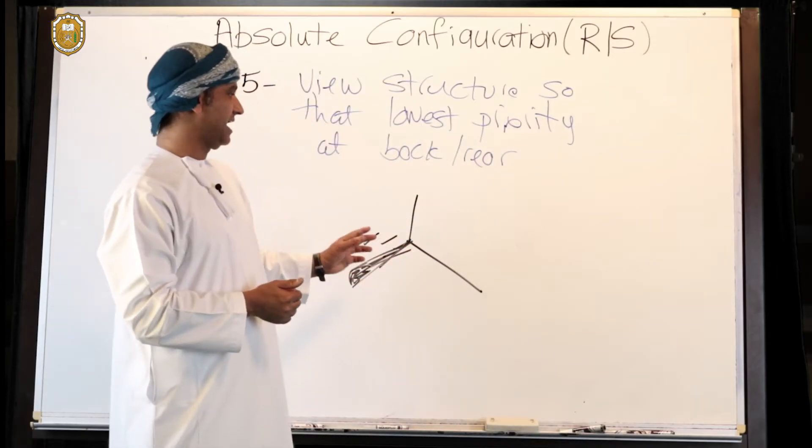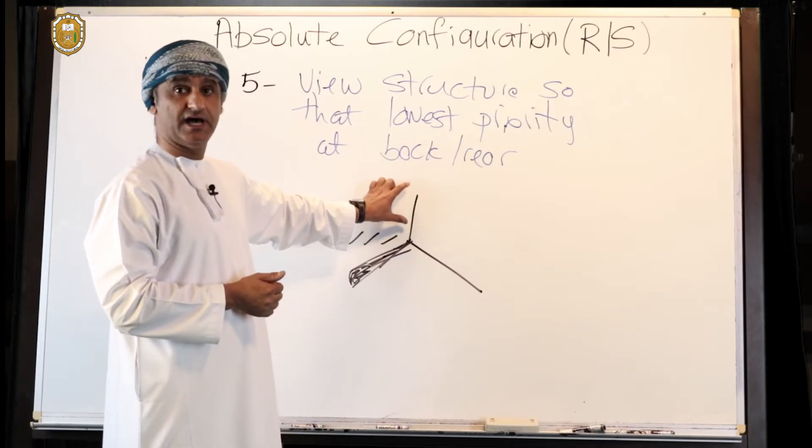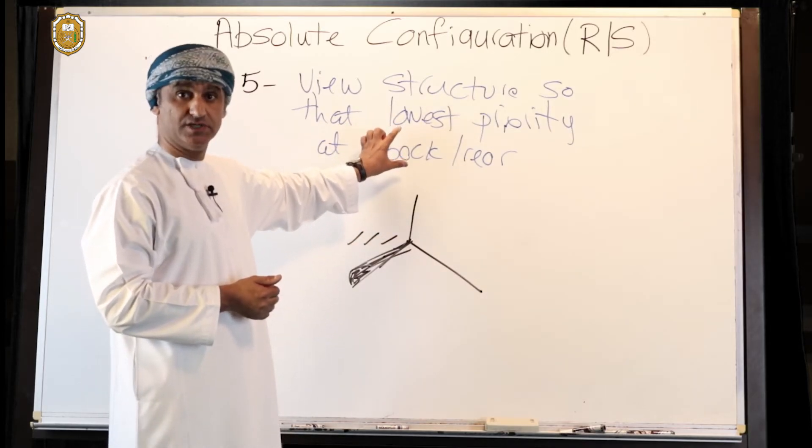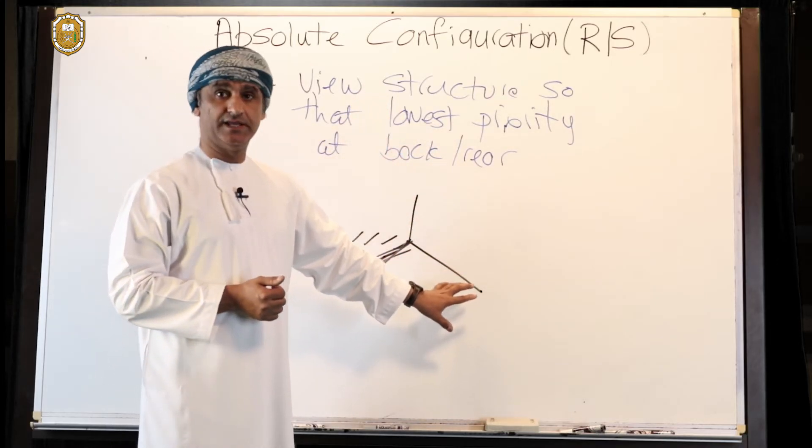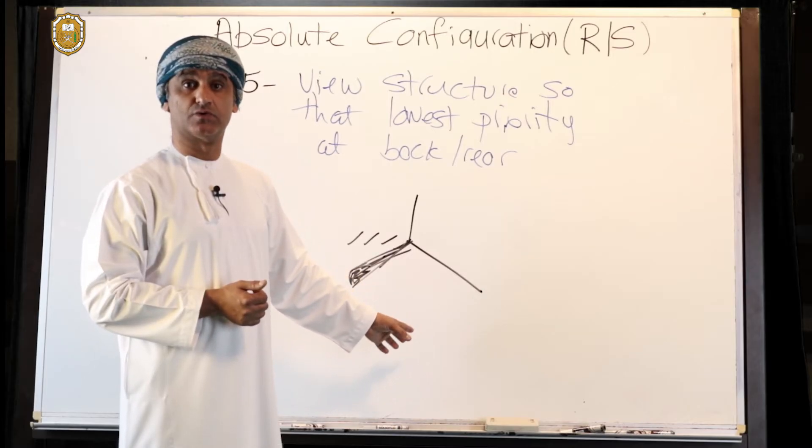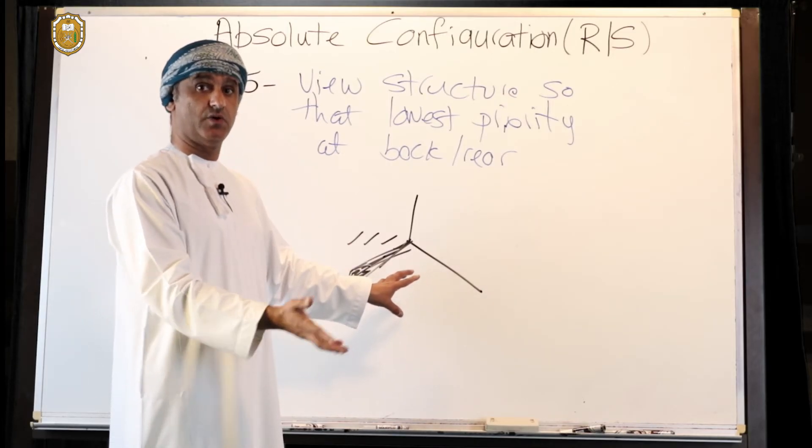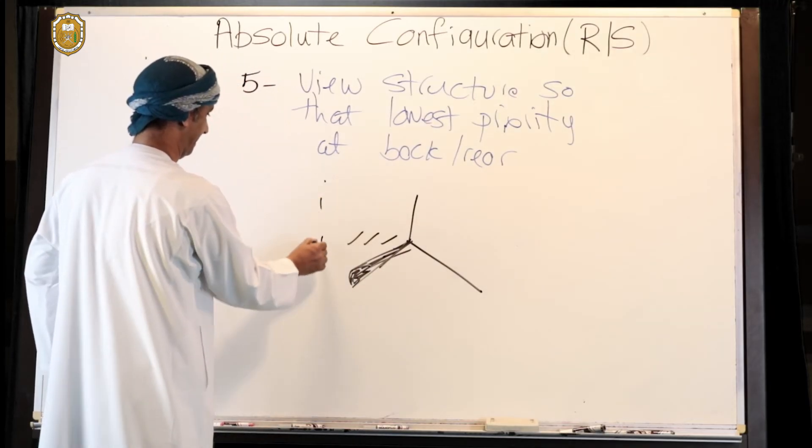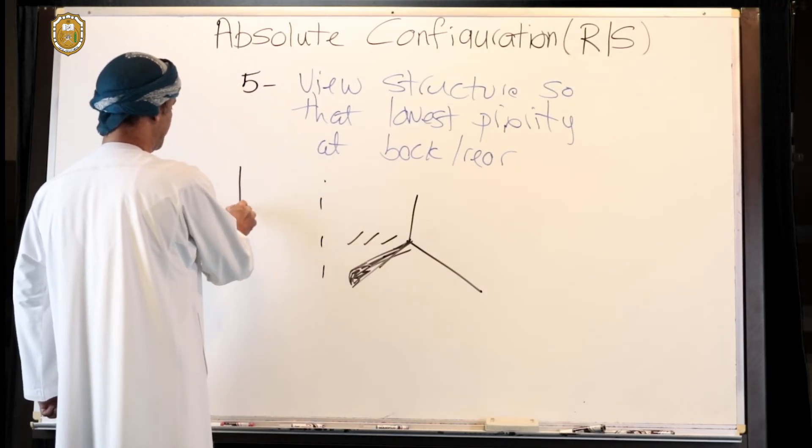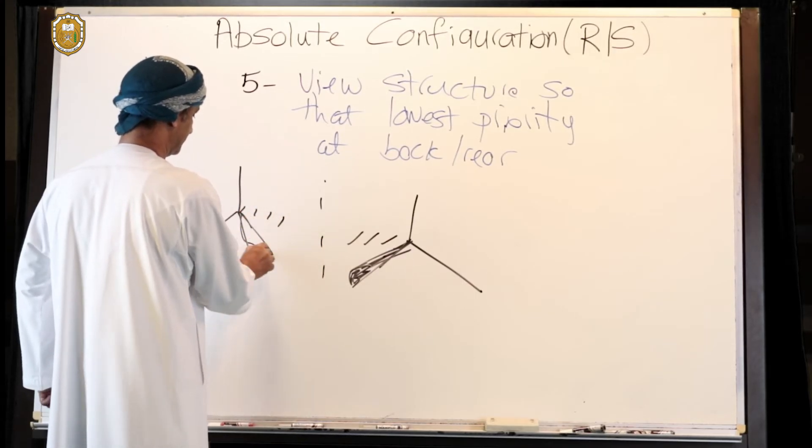We'll take, for example, a case where the lowest priority group is on this line here, or it's appointed above on the plane, for example. And another example where the lowest priority group is on the plane but to the right or to the left, if you draw the mirror image of this, something like that.